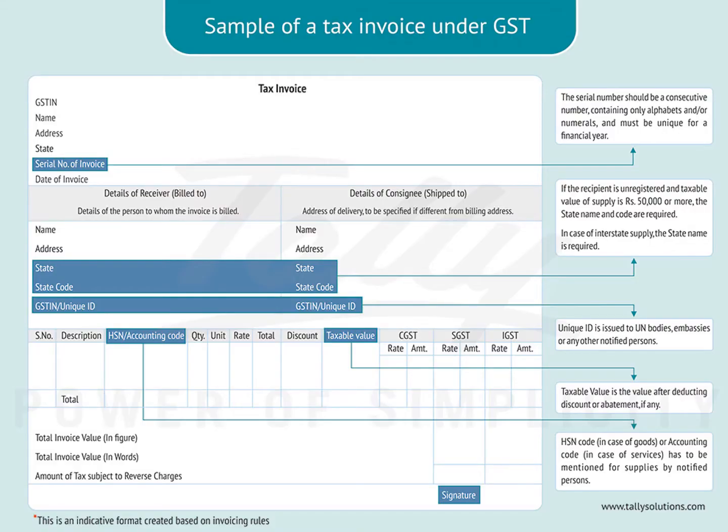This is a sample tax invoice under GST. You will see that there is a GSTN number, a serial number of invoice, date of invoice, and details of the receiver and consignor, address, state code, description, HSN number, the taxable value, and CGST, SGST, and IGST values. It is a very comprehensive invoice which we need to raise under GST.